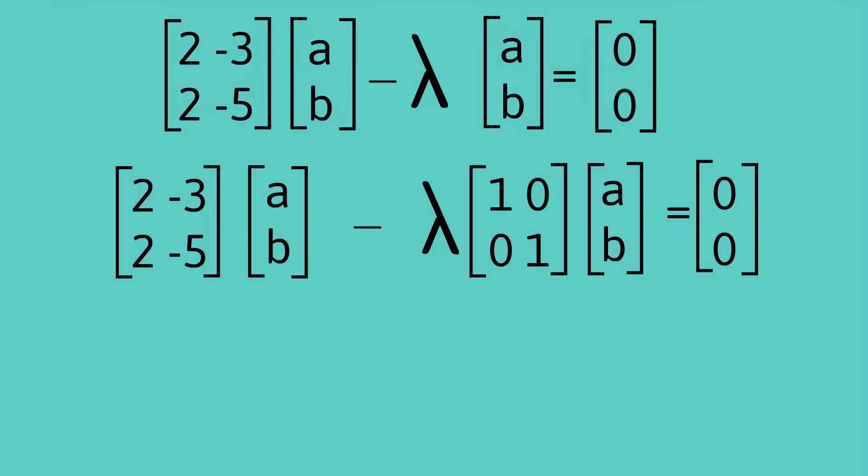Once I do that I can sort of take out the common factor of the vector [a,b] and so what I end up with is this matrix acting on the vector [a,b] which gives me the vector [0,0].